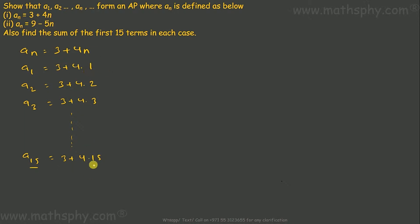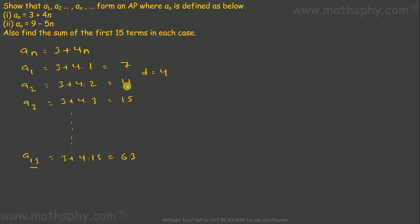Let's see if this forms an arithmetic progression. 3 plus 4 gives 7, 3 plus 8 gives 11, 3 plus 12 gives 15, and 3 plus 60 gives 63. The first term is 7, second is 11, so d is 4. Checking: 11 minus 7 is 4, 15 minus 11 is 4. The common difference d is uniform, so 7, 11, 15 up to 63 forms an AP with a = 7 and d = 4.